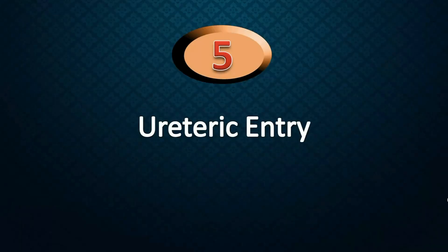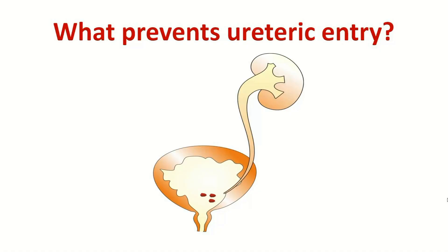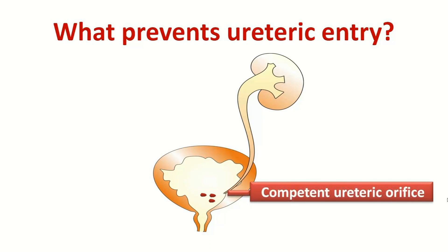Why do bacteria enter the ureter? You need to understand what prevents it — why bacteria don't gain entry into the ureter in everybody. There is some protection nature has given us: the ureter orifice, which is a very competent orifice. Urine can flow from the ureter into the bladder, but usually urine cannot flow back from bladder to ureter because of the competence of the ureter orifice. This is the foremost defense you have for the upper urinary tract.